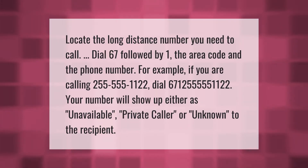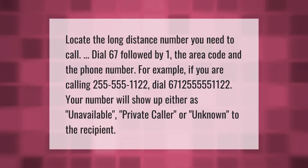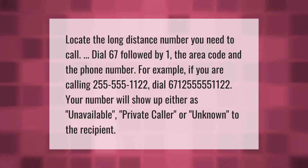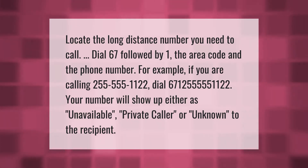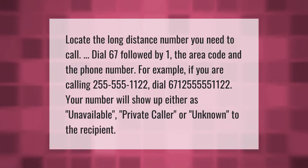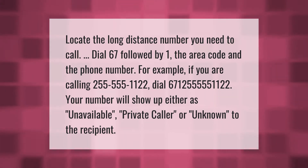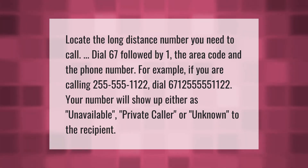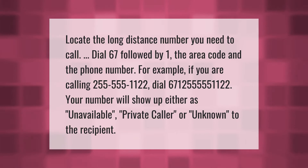To locate the long distance number you need to call, dial 67 followed by 1, the area code, and the phone number. For example, if you are calling 255-555-1122, dial 67-1-255-555-1122. Your number will show up as either unavailable, private caller, or unknown to the recipient.